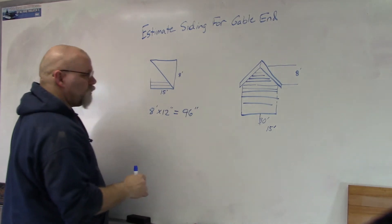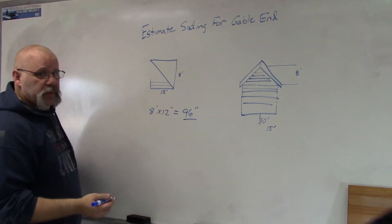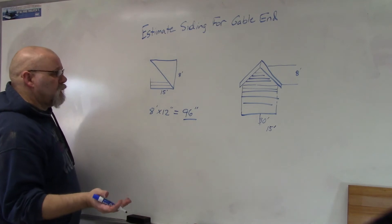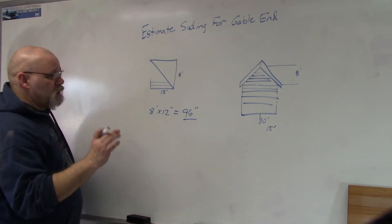And then you take that and divide by the exposure of the sheets that you're using, how much exposure are you going to have on your siding if you're using lap siding.